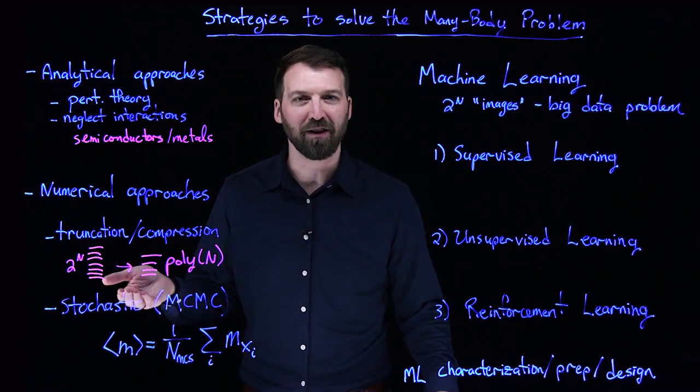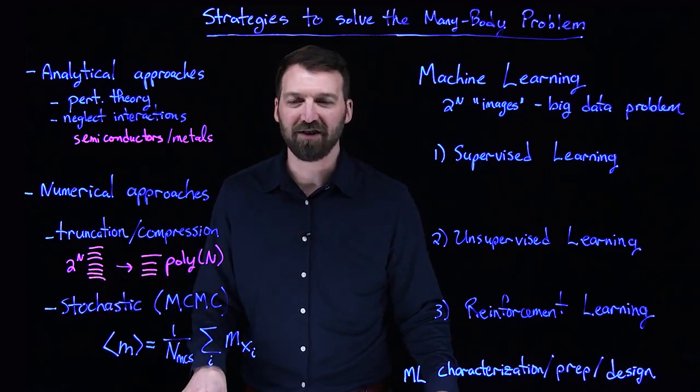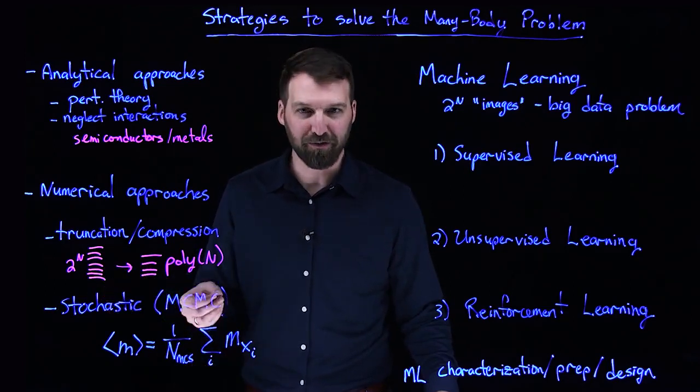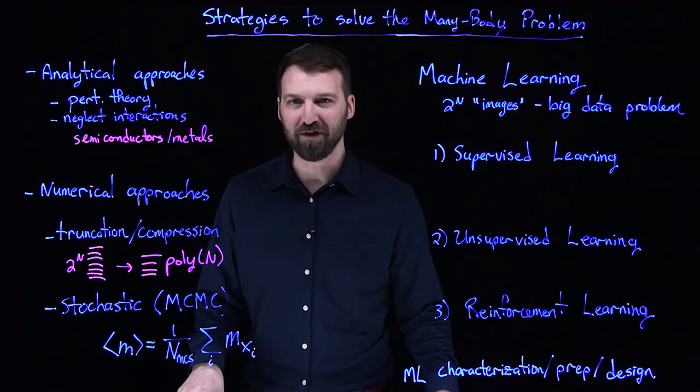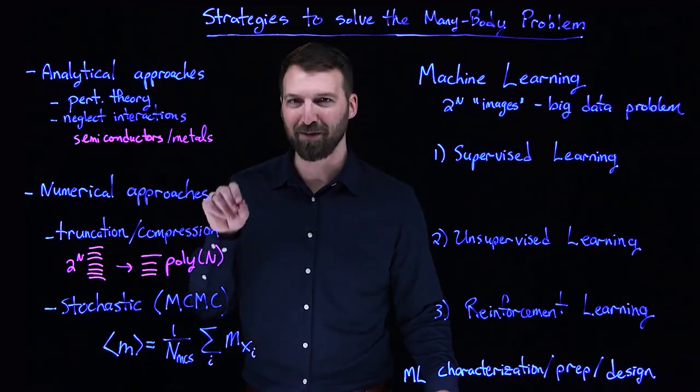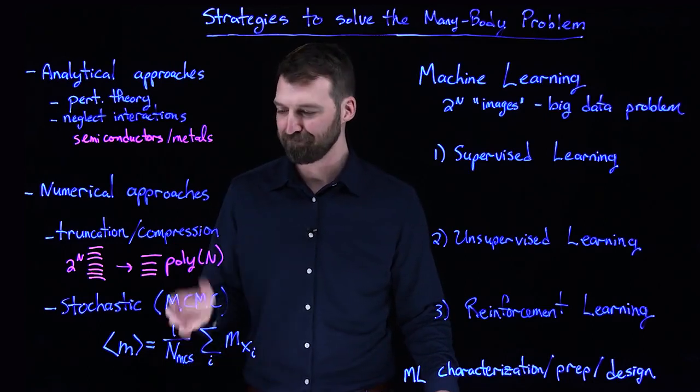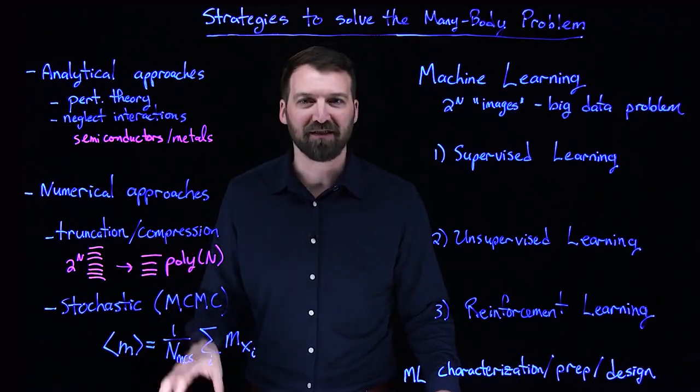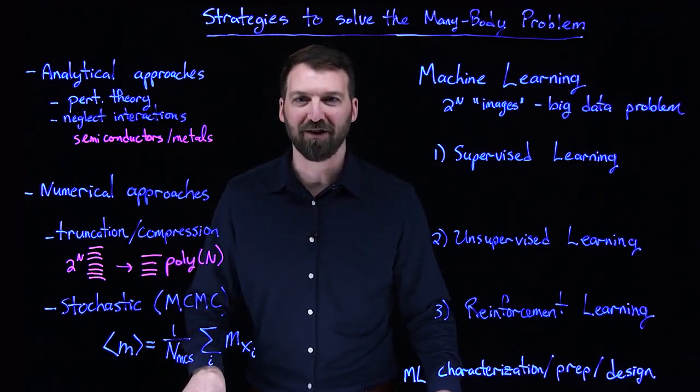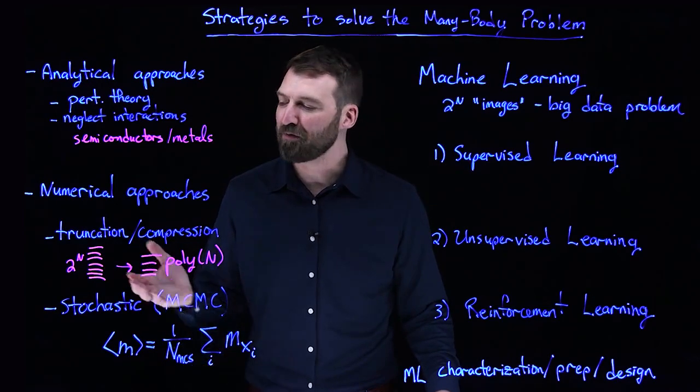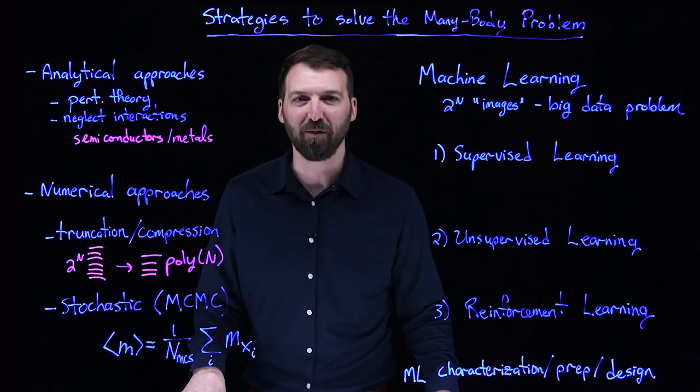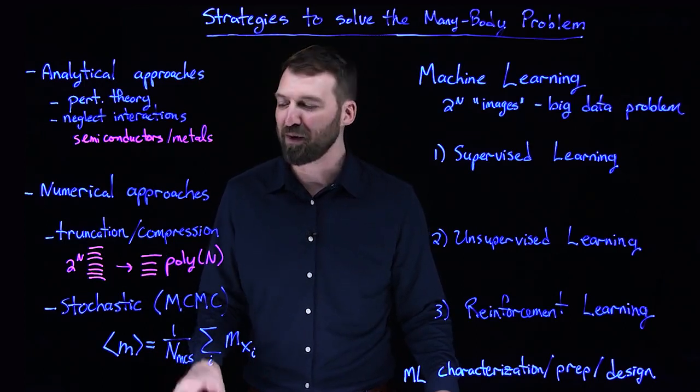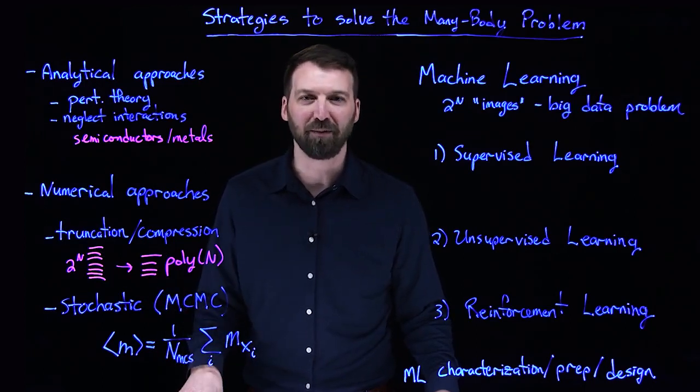If you're interested only in low-lying states, diagonalization routines such as Lanczos iterative solvers will give you better scaling than the brute force O to the M cubed that I talked about previously. Advanced methods such as the density matrix renormalization group involve sophisticated decimation schemes based on the entanglement structure of your wave function and basically are known to work very well, for example, in one dimension.